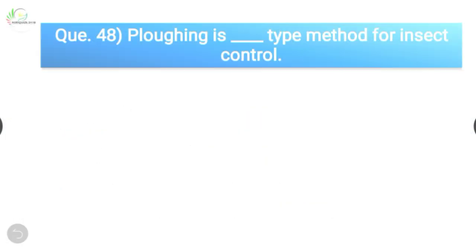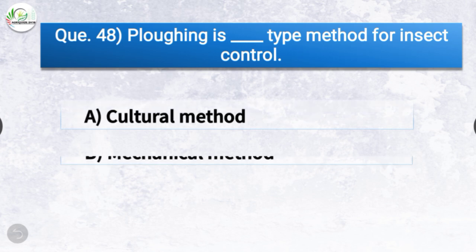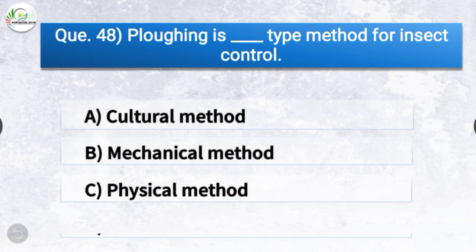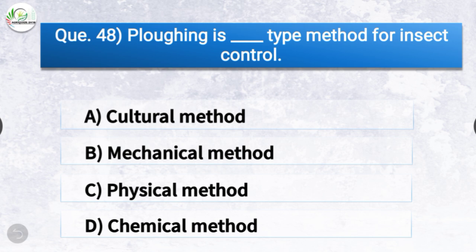Question number forty-eight: Plowing is a dash type method for insect control. The options are cultural method, mechanical method, physical method, or chemical method. The correct answer is option A, cultural method — plowing is a cultural method for insect control.